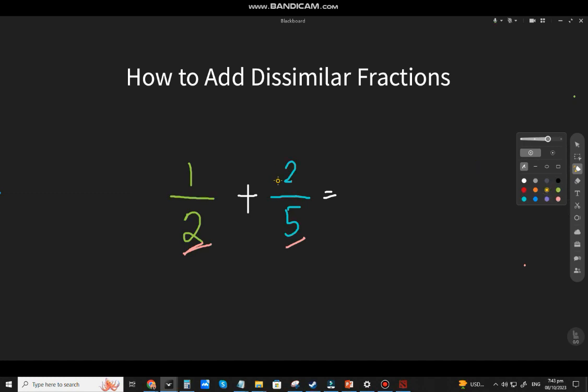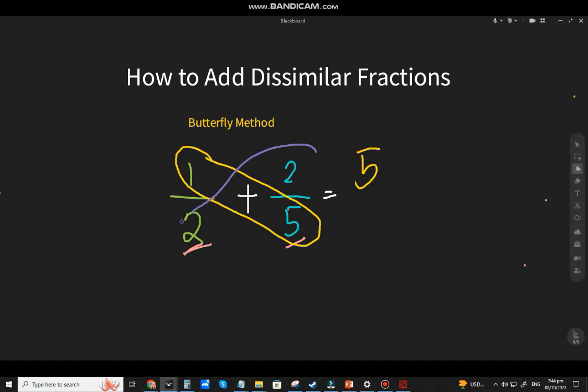Butterfly method. The first thing you will do, this is step 1, it's just cross-multiply. 1 times 5, that will be 5. Right? Then, next one, 2 times 2. Then plus, because plus is what we're going to use here. 4.